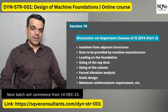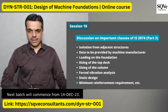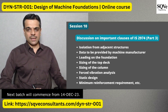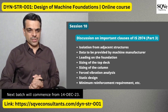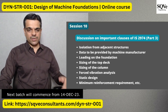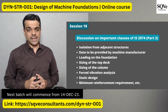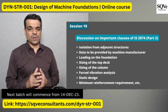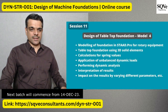In the next session we'll talk about important clauses of IS 2974 Part 3, which is specifically for rotary equipment having medium or high-speed rotating machines. We'll cover data to be provided by the machine manufacturer, sizing of the top deck, sizing of the columns, vibration analysis, static design, and more.